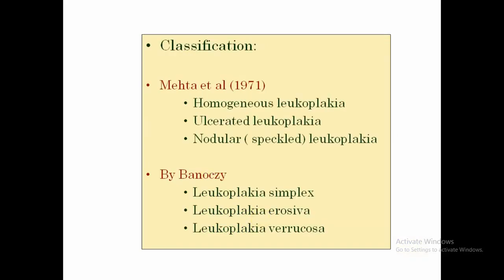Coming to the classification of Leukoplakia, there are various classifications, but basically all involve two main forms: homogeneous and non-homogeneous. Homogeneous Leukoplakia means the lesion is more or less uniform throughout, whereas in non-homogeneous types, one part of the lesion differs from another — it may be thicker in areas or have a mix of red. Non-homogeneous Leukoplakia can be further subdivided into various types.